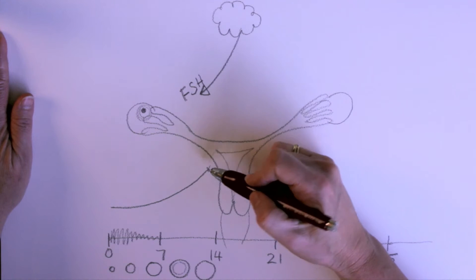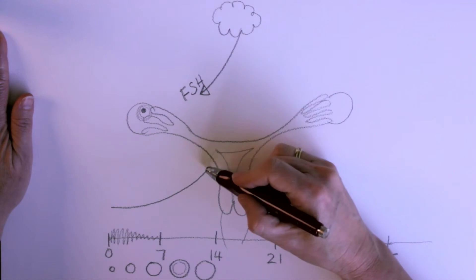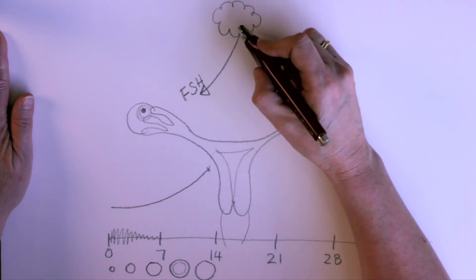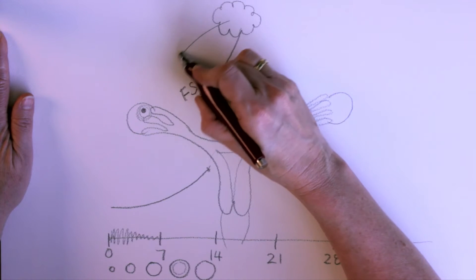and at some stage, it gets to a certain point, and your brain goes, oh, your follicle's got big enough, there's lots and lots of hormone going on, and I'll send another hormone called